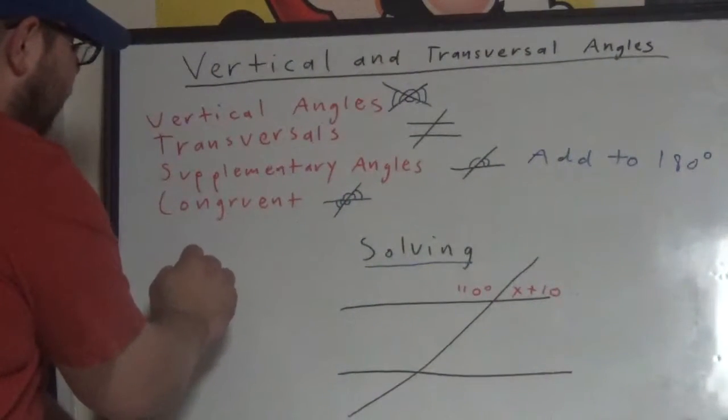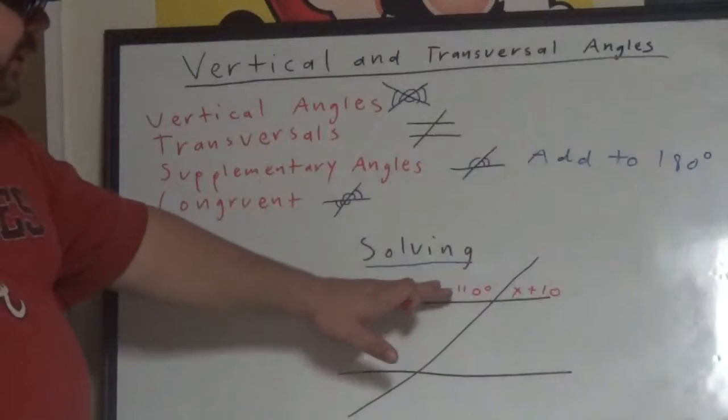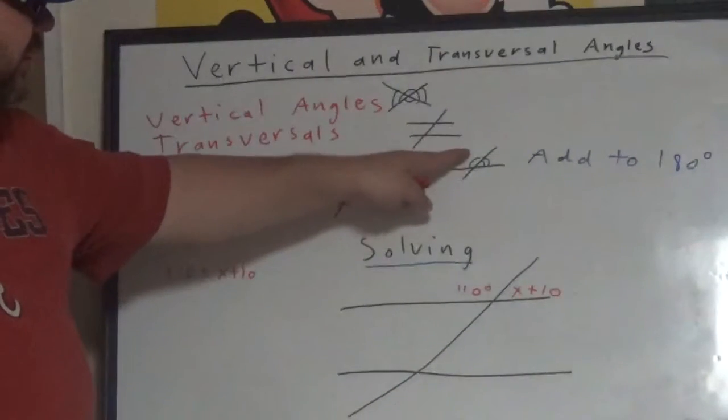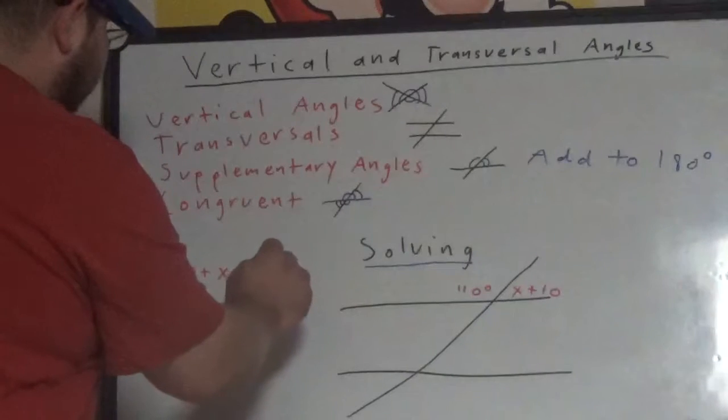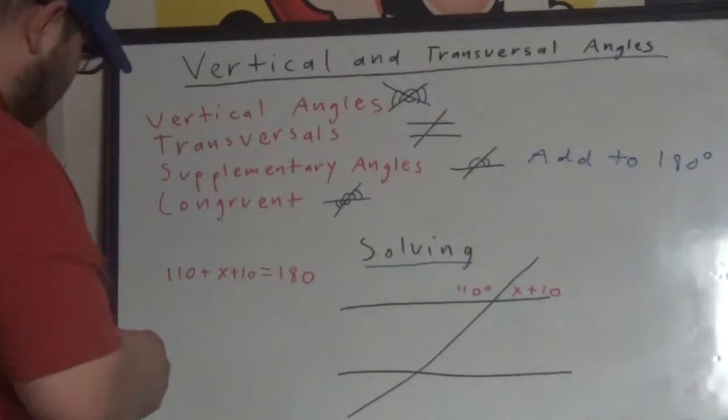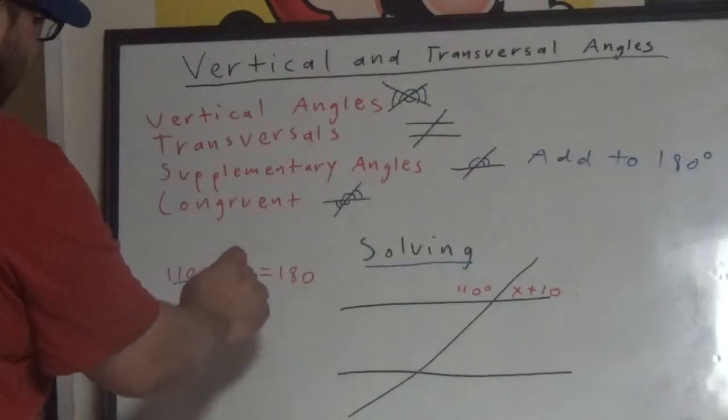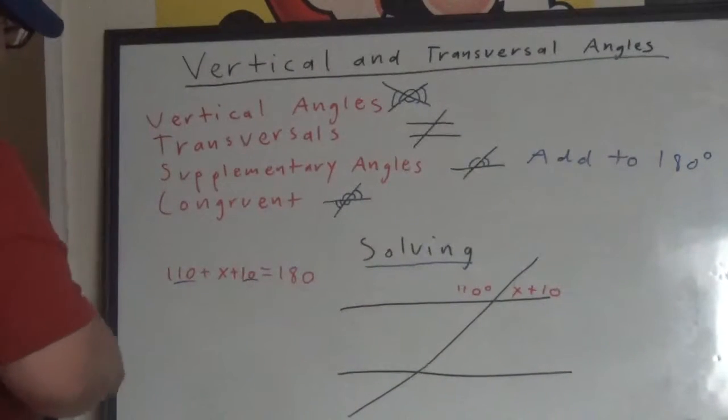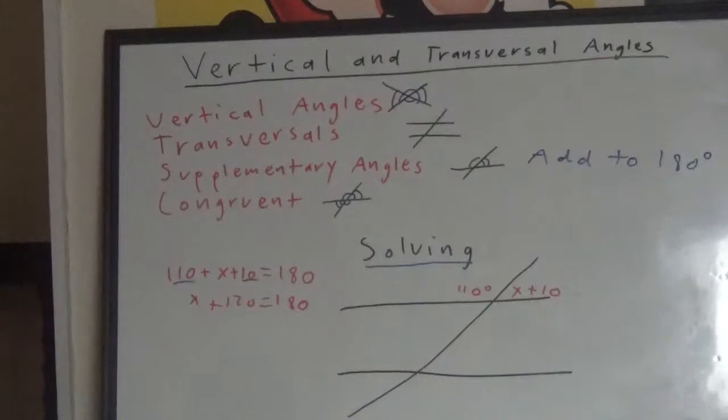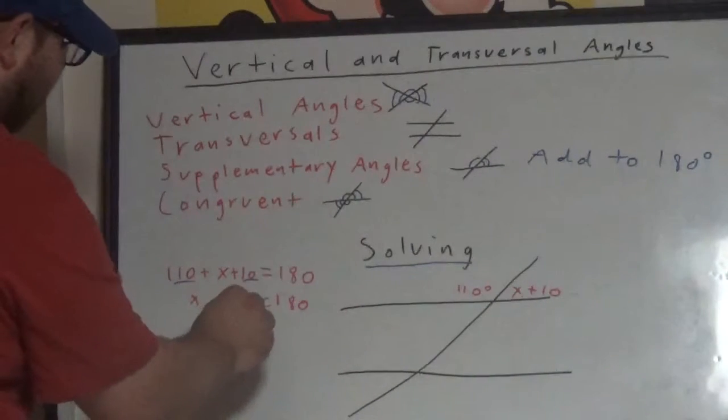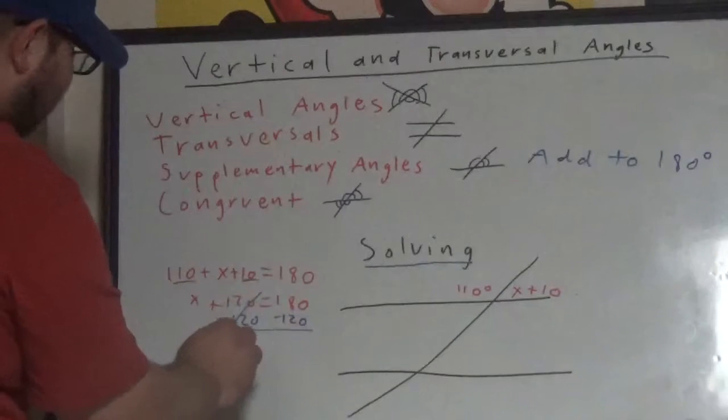I'm going to put 110 plus x plus 10. Remember, if you look at this, hopefully you can recognize that they're supplementary angles. It looks just like our example. So, they add to 180. Now, it's an easy problem. An early two-step equation. Combine like terms. We'll have x plus 120 equals 180. And now, subtract 120 on each side.